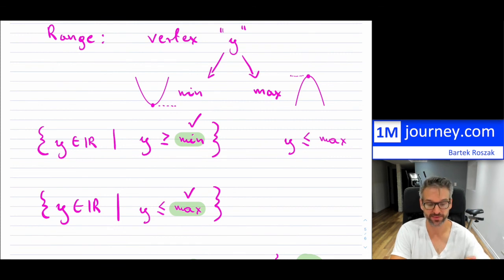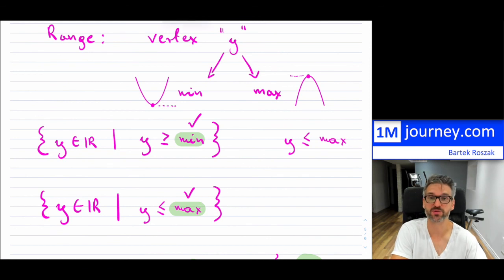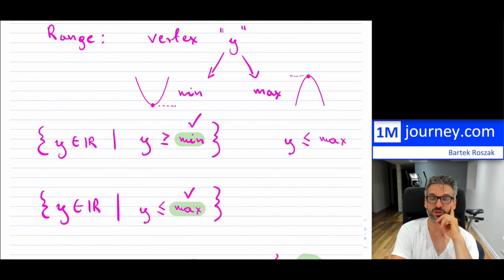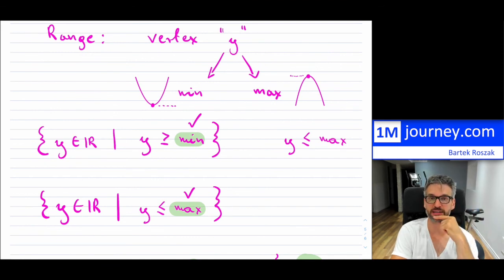In recap: the domain is not restricted because it's just a regular polynomial — nothing to worry about. For the range, you are restricted by the minimum or the maximum value of y at the vertex. That's pretty much it for this review. I hope it gives you a good sense and gets you started refreshed on these quadratic functions. Thanks for watching — we'll see you in a future video. Bye, everybody.